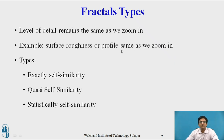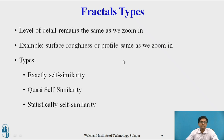Fractal types — the level of details remain the same as we zoom in. As we have seen in the example, surface roughness and profile will be the same as we zoom in. Types of fractals are: exactly self-similarity, quasi self-similarity, and statistical self-similarity fractals.